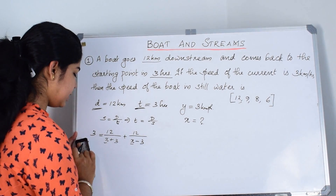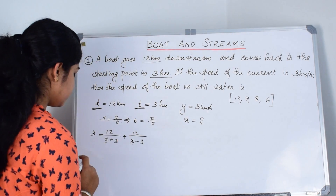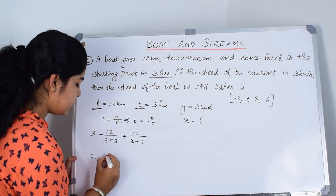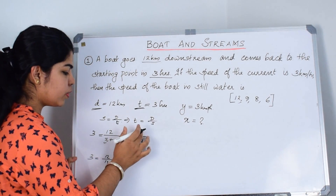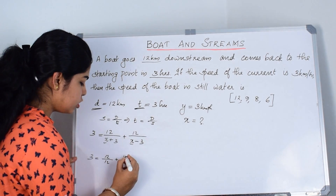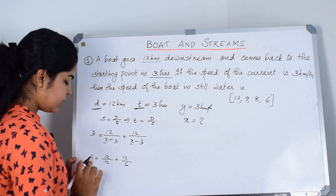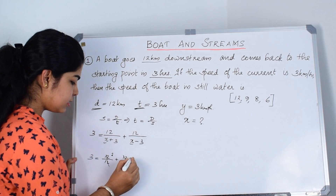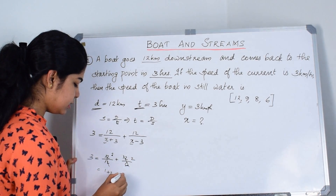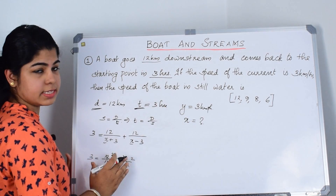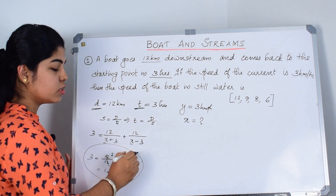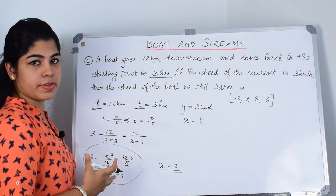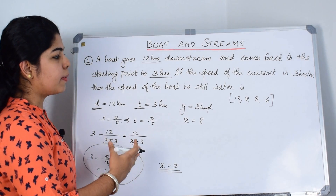Taking the second option X equals 9: we get 12/(9+3) plus 12/(9−3), which is 12/12 plus 12/6, giving 1 plus 2 equals 3. The second option satisfies the equation, so our answer is X equals 9. You can solve these types of questions within seconds using this method — taking values from the options.